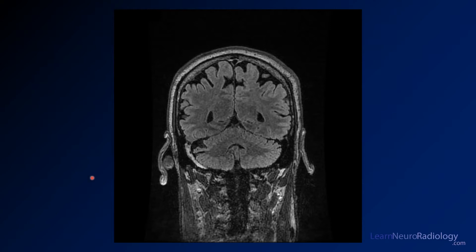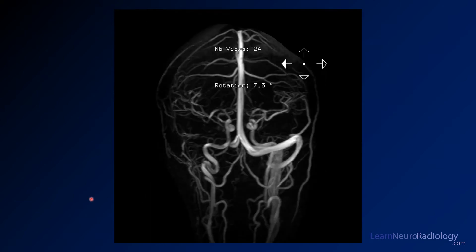On the FLAIR image, this transverse sinus or transverse-sigmoid junction is T2 hyperintense compared to the other sinuses, so you see that the right sinus is abnormal. On the MR venogram portion, you're missing the entire transverse and sigmoid sinus on the right, whereas you have the transverse, sigmoid, and jugular on the left — so that drainage is absent on the contralateral side.